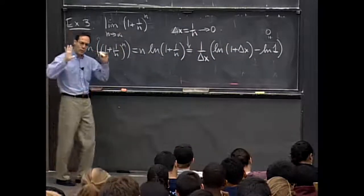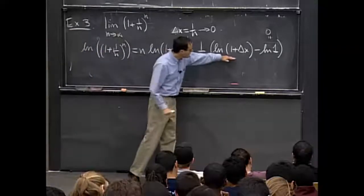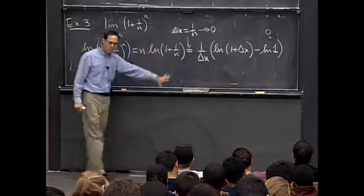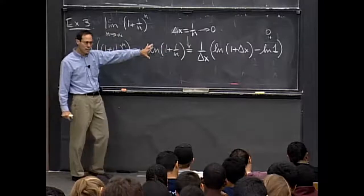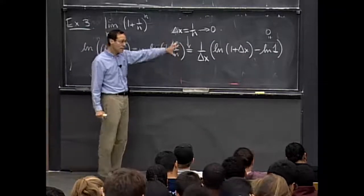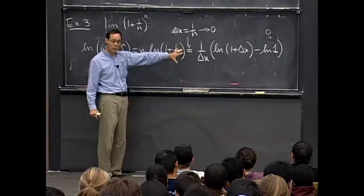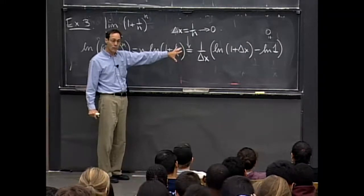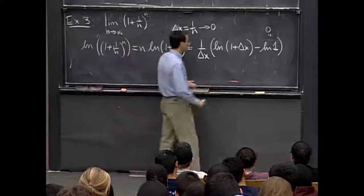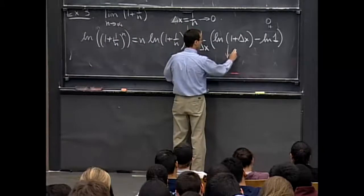All right, now you're supposed to recognize all of a sudden what this thing, what pattern this fits into. This is the thing which we need to calculate in order to calculate the derivative of the log function. So this is, in the limit, as delta x goes to 0,